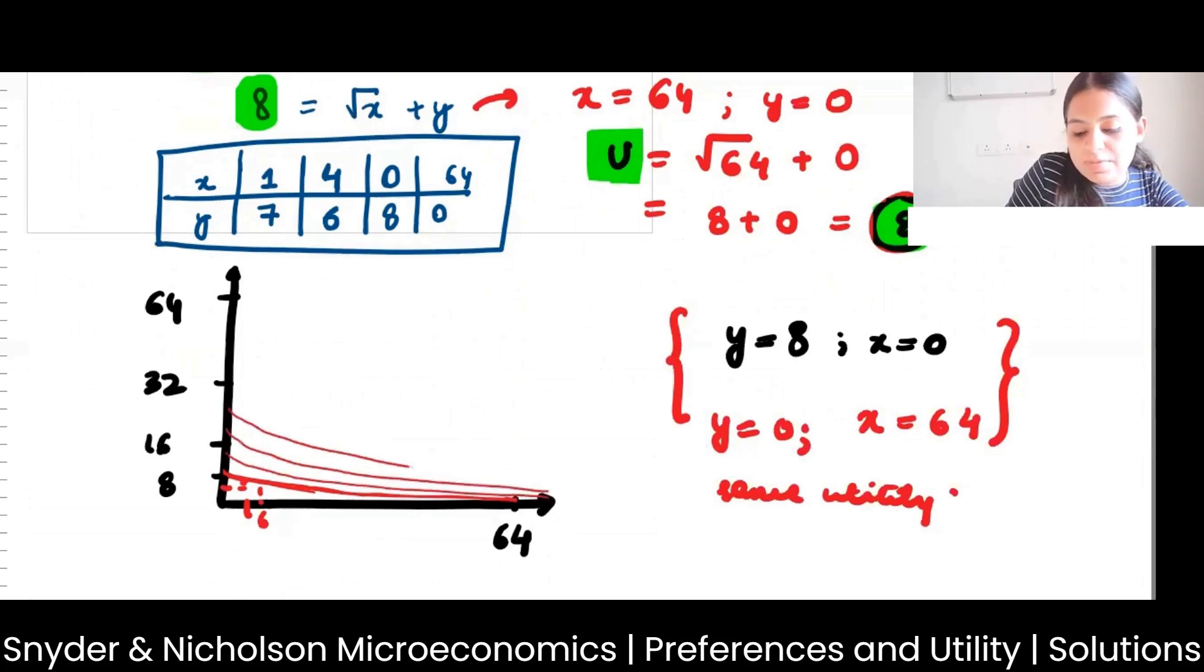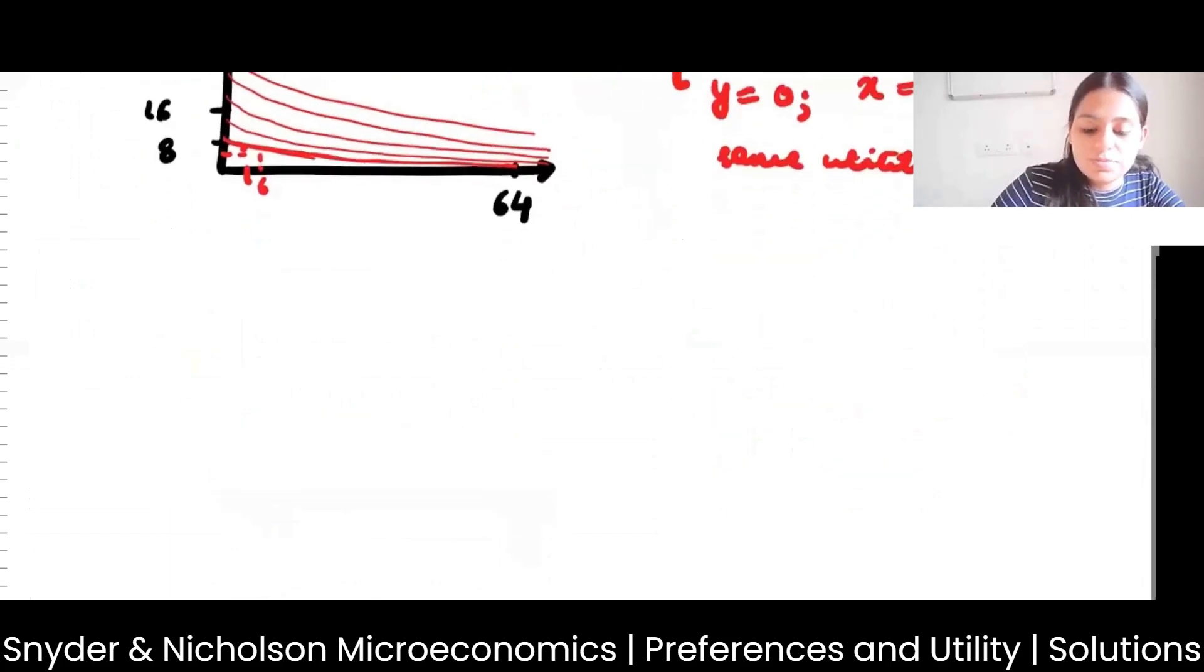This is your indifference map, like this. Now if you ask me what is the slope? Slope is MRS. MRS is MUx by MUy.